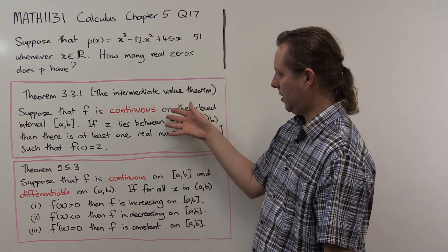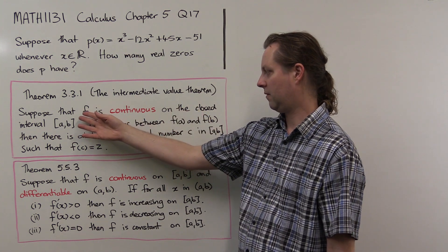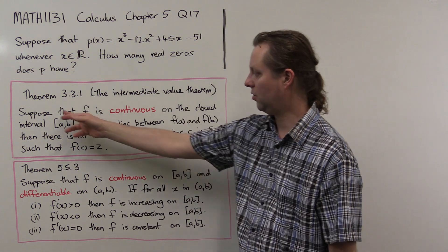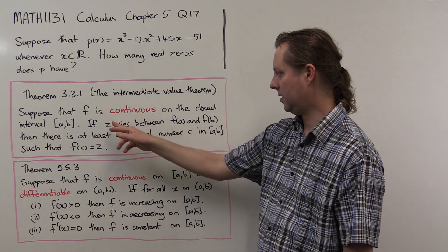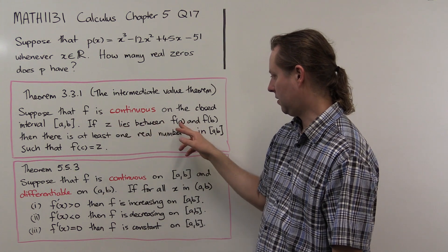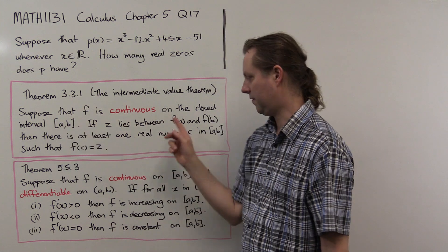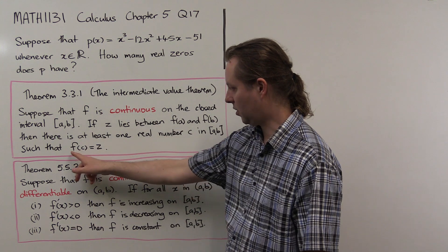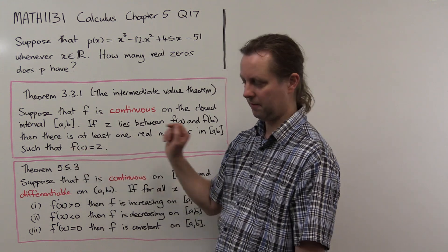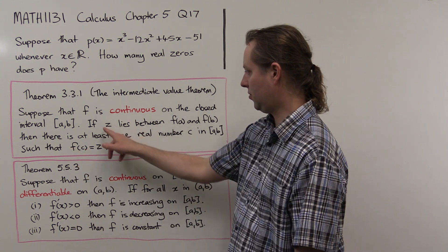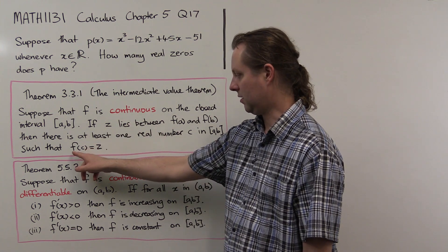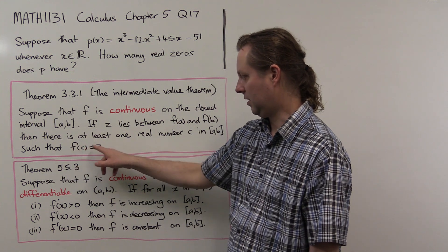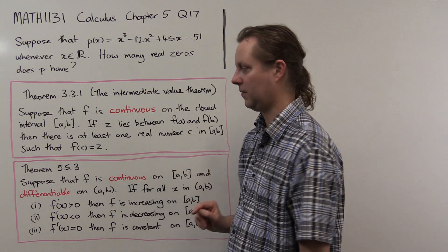The theorems we're going to use are the intermediate value theorem. That's a theorem for a continuous function f — if it's continuous on a closed interval from a to b, the theorem says that if we pick a value z that lies between the values f(a) and f(b), then there must be one real solution to the equation f(c) equals z. We're going to choose z to be zero because we're interested in finding whether there's a solution to f(c) equals zero — in other words, a zero.